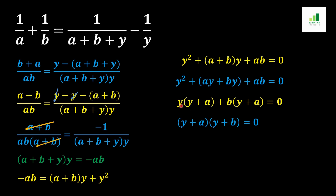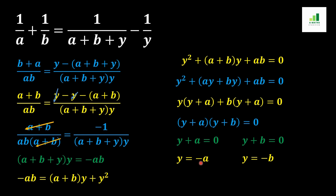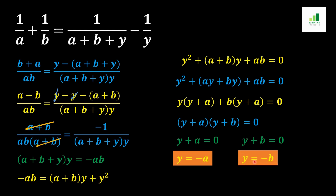In the second method, we factor the quadratic directly: (y + a)(y + b) = 0, giving y + a = 0 and y + b = 0. So y = -a and y = -b, the same values as before. I hope this video is very useful to all of you. If you like this video, please hit the like button and subscribe to our channel. Thank you.